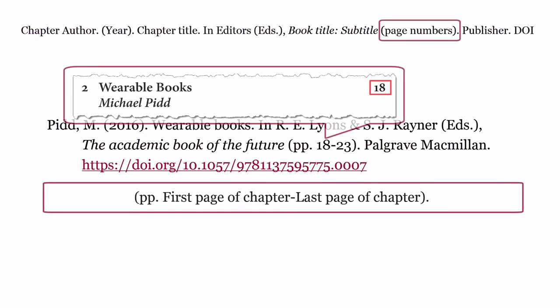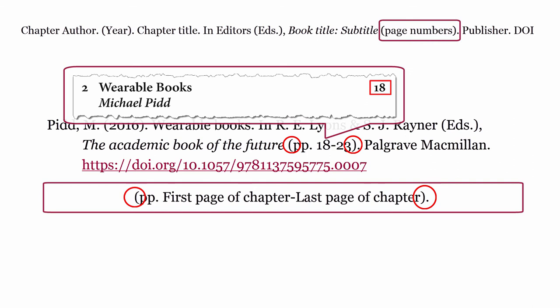Page numbers. These are the page numbers of the chapter, formatted as 'pp.' followed by the first page of the chapter, a dash, then the last page of the chapter. The page numbers are surrounded by round brackets. End the page numbers section with a full stop.